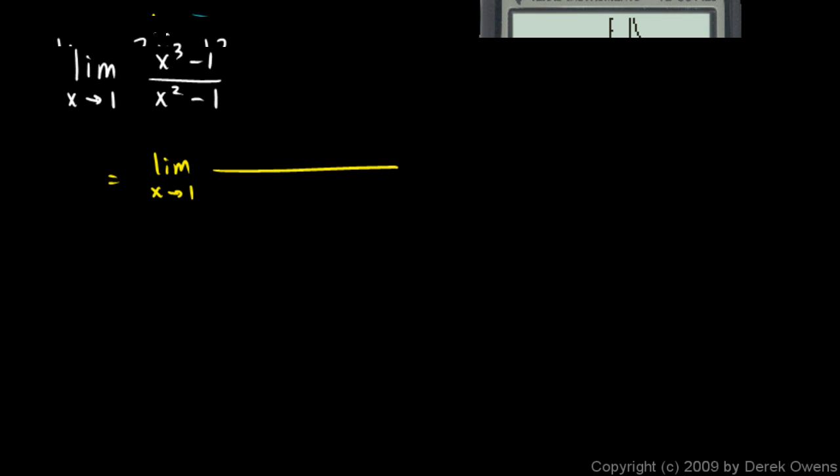And the denominator is easy. x squared minus 1 is just x plus 1 times x minus 1. That's the difference of two squares. The difference of two cubes is a little bit trickier, but this factors up here as x minus 1 times x squared plus x plus 1. And then you can see the x minus 1 factor cancels out.